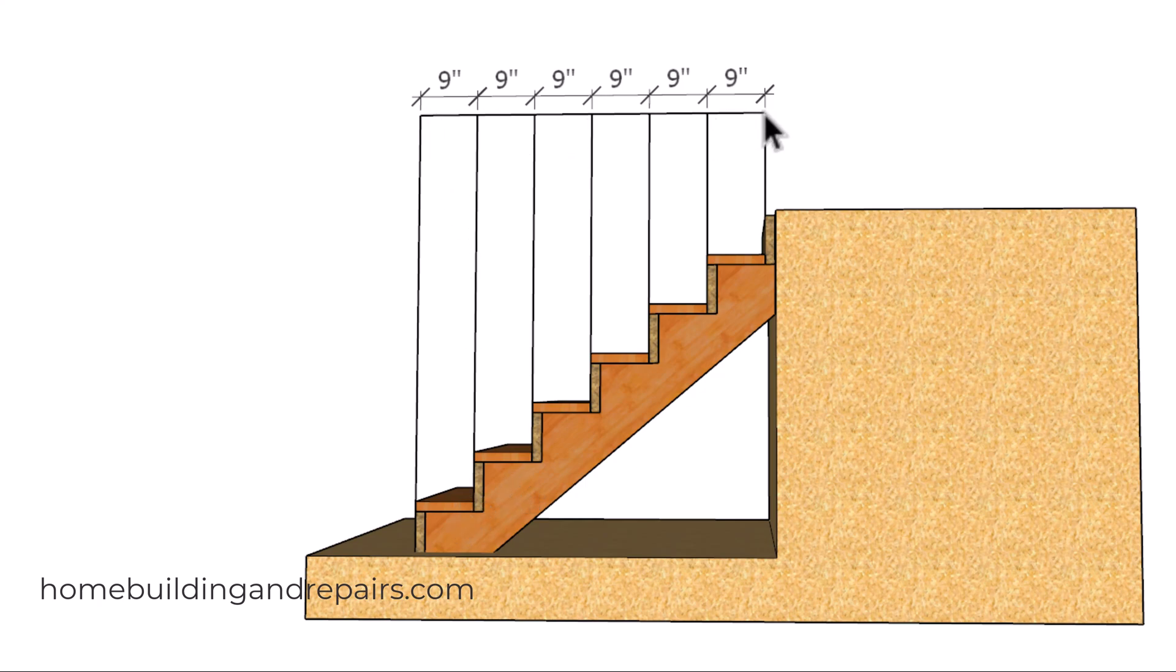The horizontal length of the stairway does not change unless you modify the stairway. So the only way I can change the 9 inch treads to 10 inch treads would be to extend the length of each step by one inch and extend the horizontal length of the stairway.